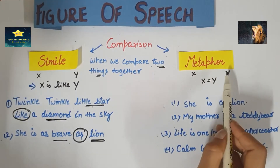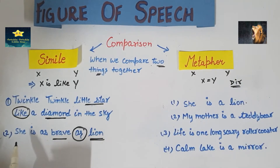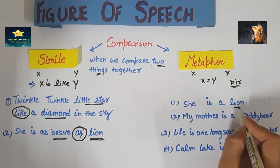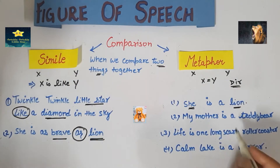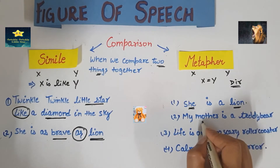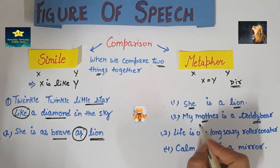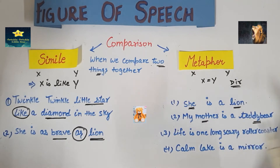Metaphor — here also we are making a comparison like simile, but we do it directly. X is directly Y. For example, in simile we say 'she is as brave as a lion,' but in metaphor we say 'she is a lion.' We are still comparing bravery with a lion's bravery, but we are not using 'like' or 'as.' Next example: 'My mother is a teddy bear.' Here we are saying our mother is like a teddy bear — as cute as a teddy bear — but the comparison is direct. In simile we would say 'my mother is like a teddy bear,' but in metaphor we say 'my mother is a teddy bear.'